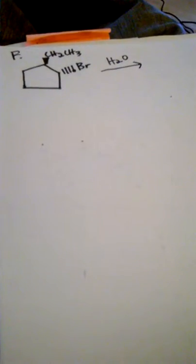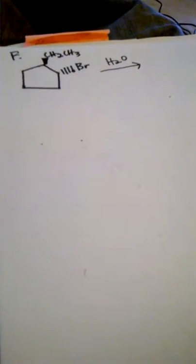All right, so I'm just going to do one last problem. I think this is number, or this is F on activity 4, on the worksheet we did yesterday. And so we want to decide if it's SN1 or SN2 and draw the product with the correct stereochemistry, and I'm going to do the mechanism too.